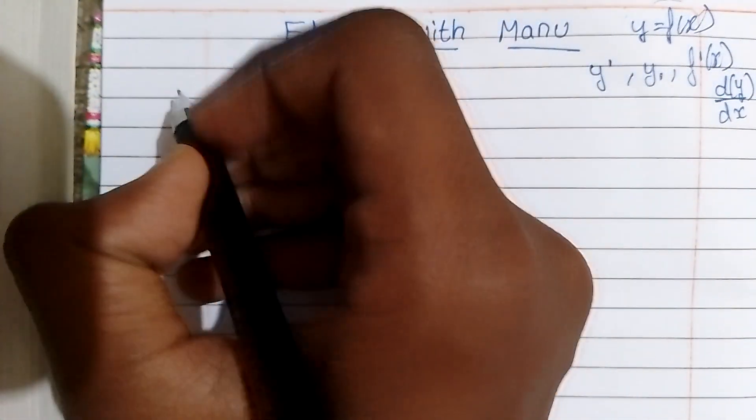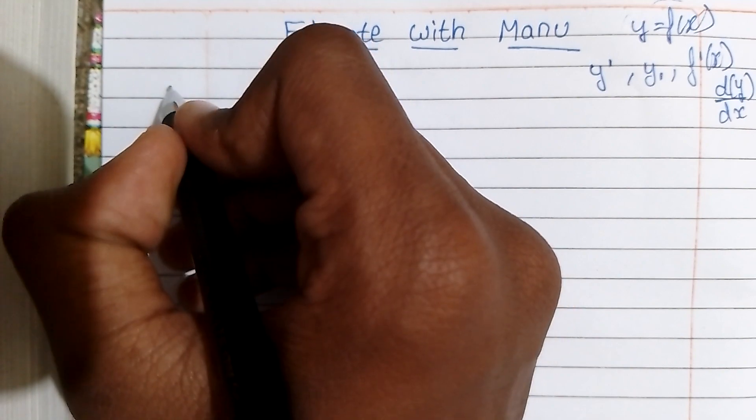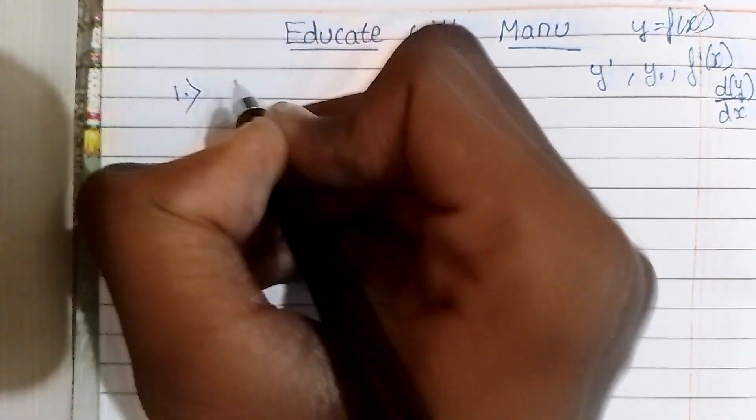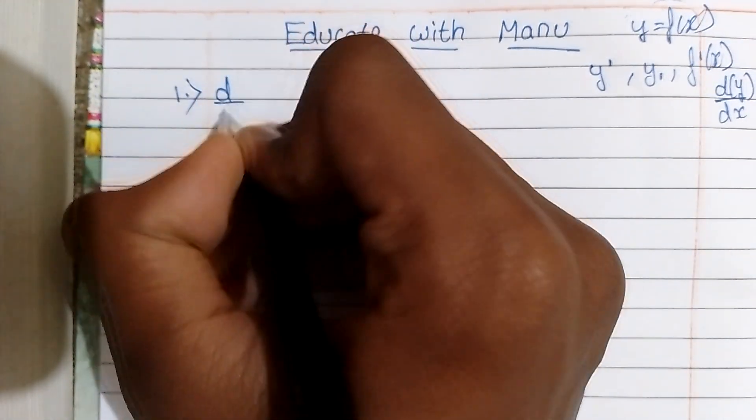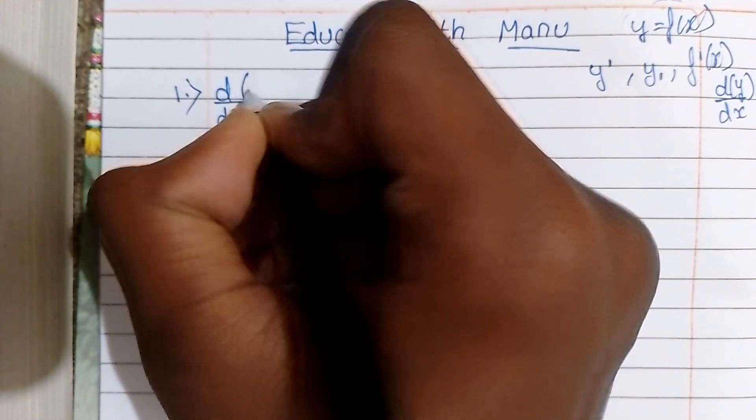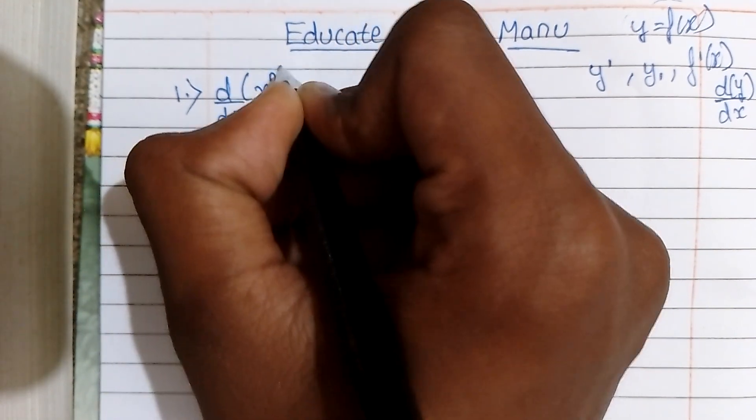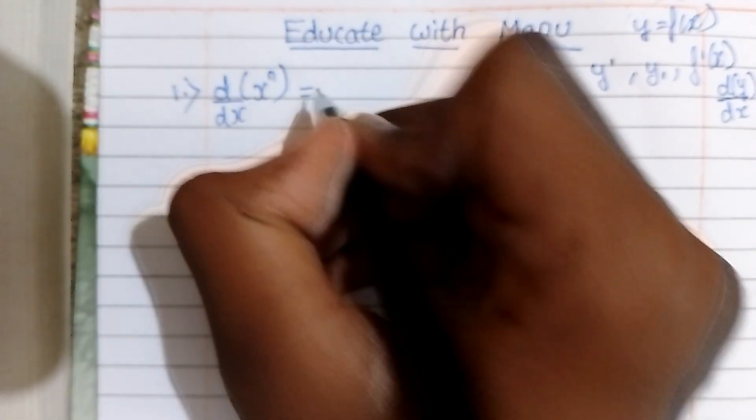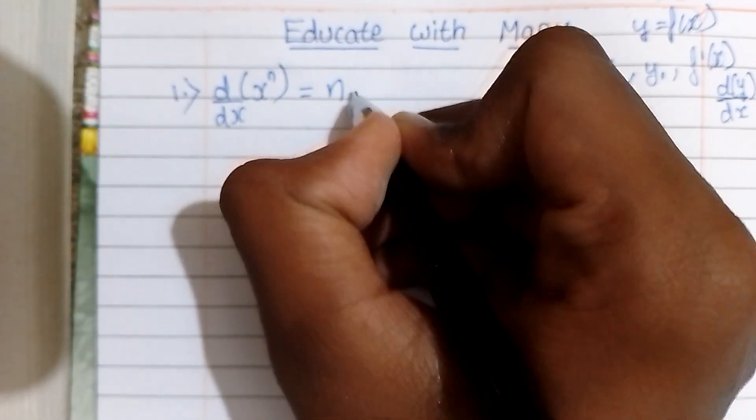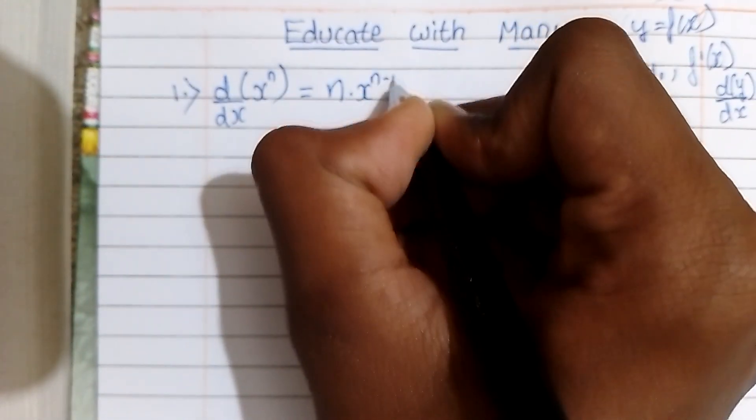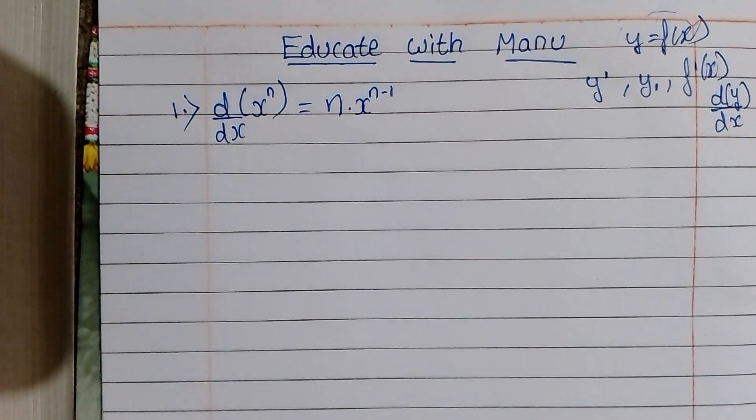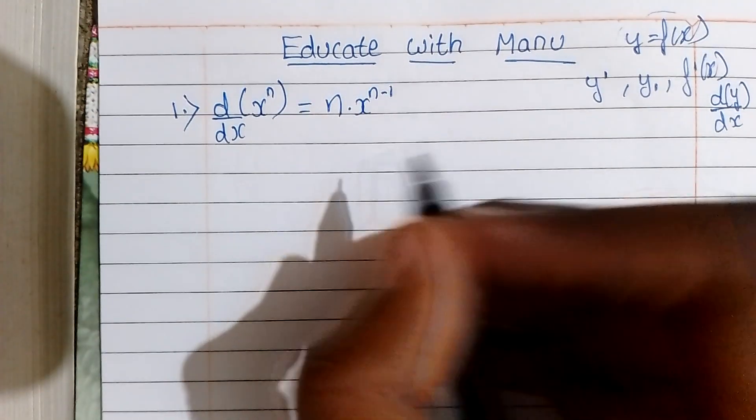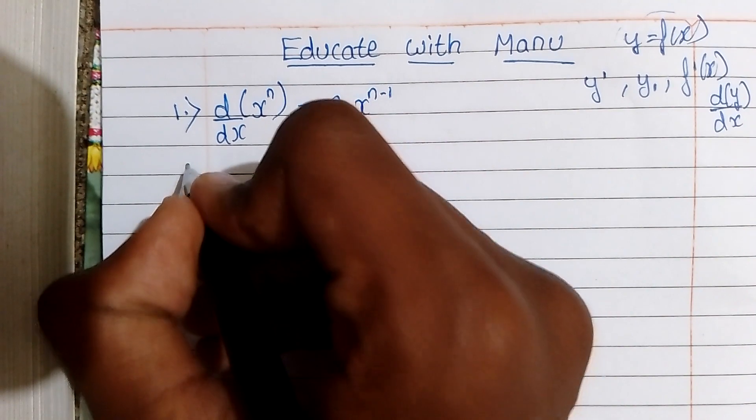First, let's take the basic formula. d/dx of x^n, the derivative is n times x^(n-1). This will be the answer.